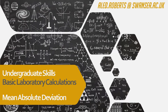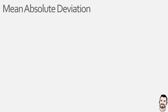In this particular video we're going to focus on the mean absolute deviation. For this you will need to understand what the arithmetic mean and normal distribution are, so I'd advise you watch the associated video before continuing. Before we look at the mean absolute deviation, or MAD for short, we need to understand two things: what we mean by the term 'absolute' and what we mean by the term 'deviation'.